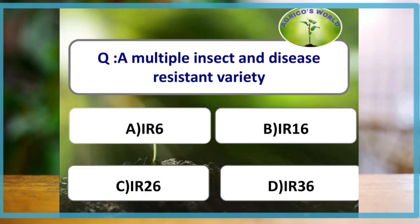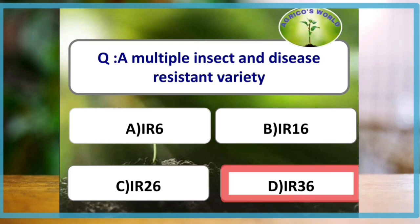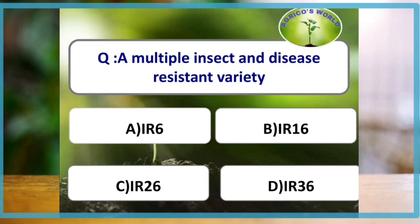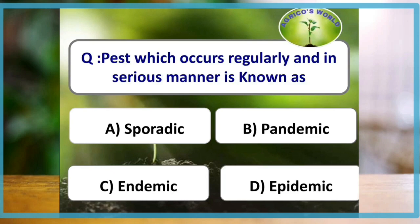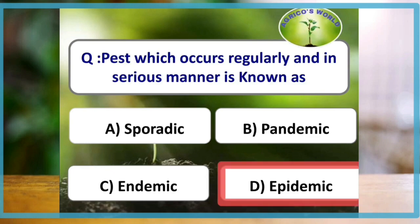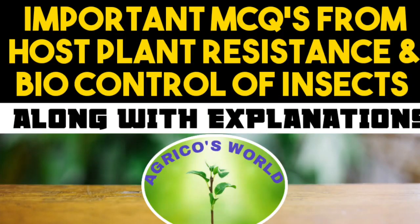A multiple insect and disease resistant variety is IR 36. A pest which occurs regularly and in a serious manner is known as an epidemic pest.